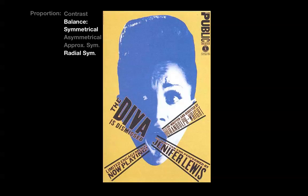This poster by Paula Scher is a great example of symmetrical balance and radial symmetry occurring at the same time. There's another type of balance used here — balance in regards to the amounts of color used. For example, reducing the amount of blue by reducing the size of the head shifts emphasis towards the yellow background and the larger black type, reducing the importance of the figure and shifting the balance of visual weights.